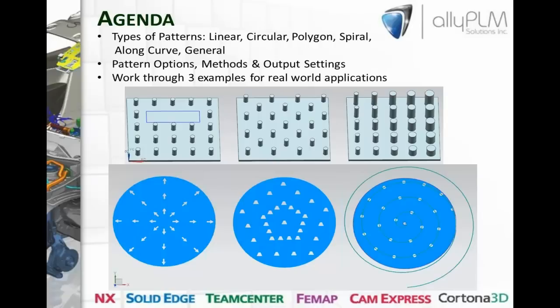As we can see on the first slide here, the picture on top shows the different types of linear patterns, which was previously known as a rectangular array. Those are the first type of patterns we'll be looking at. And then in the lower picture, starting from the left, we have a circular pattern. The one in the middle is going to be the polygon pattern, and then the one on the right will be the spiral pattern.